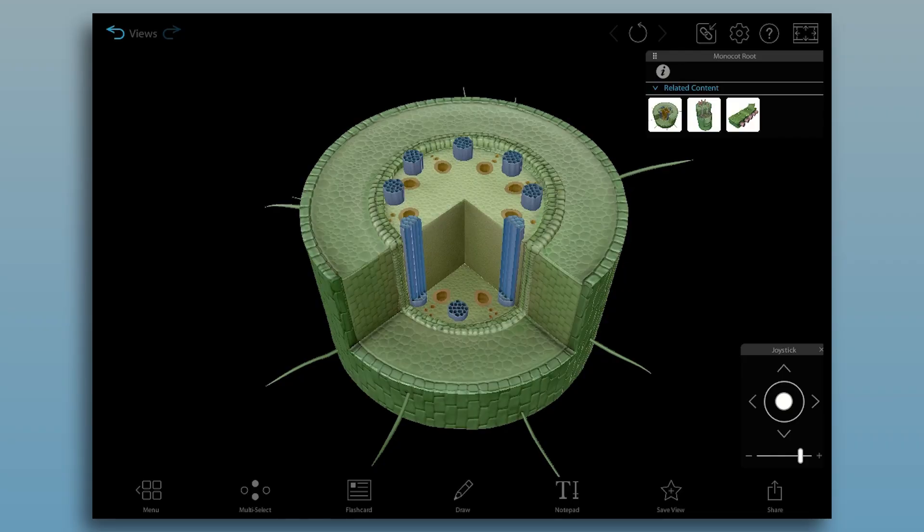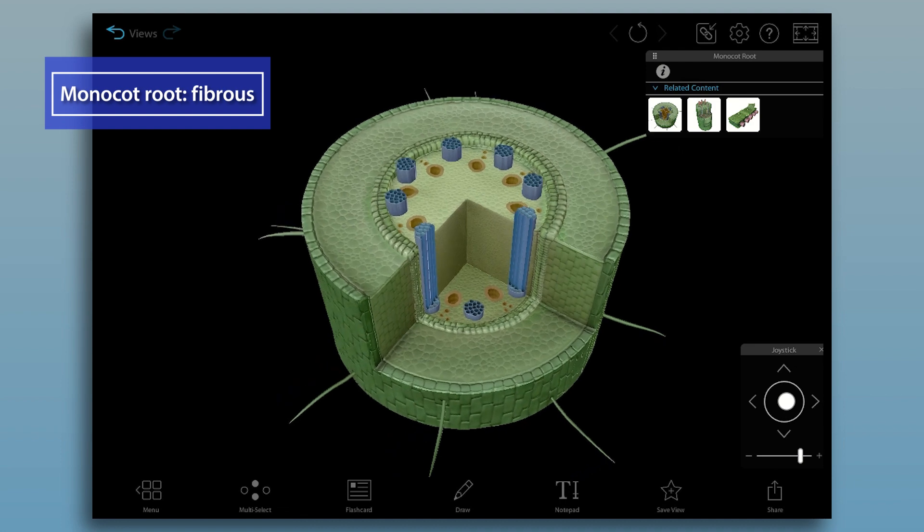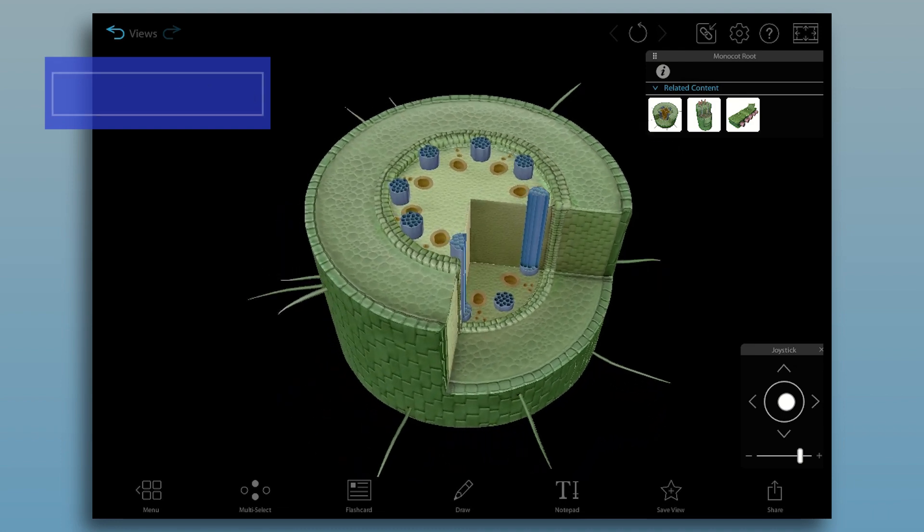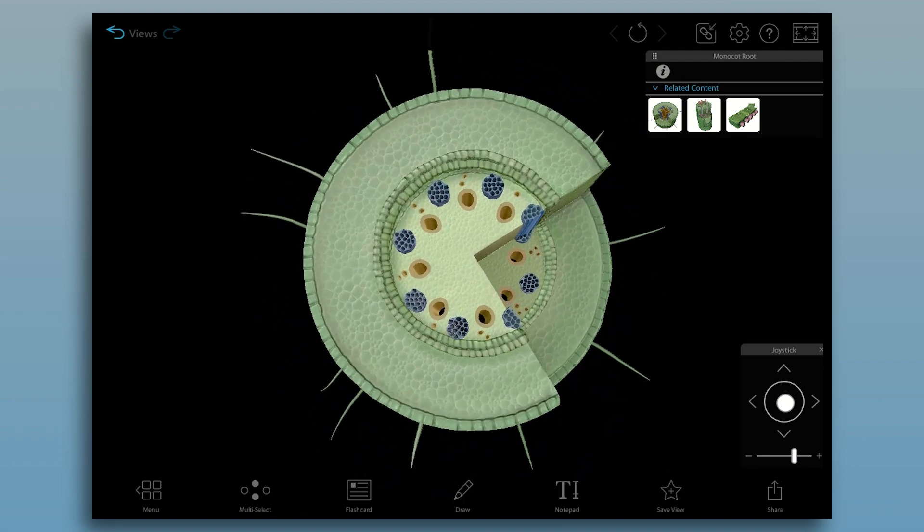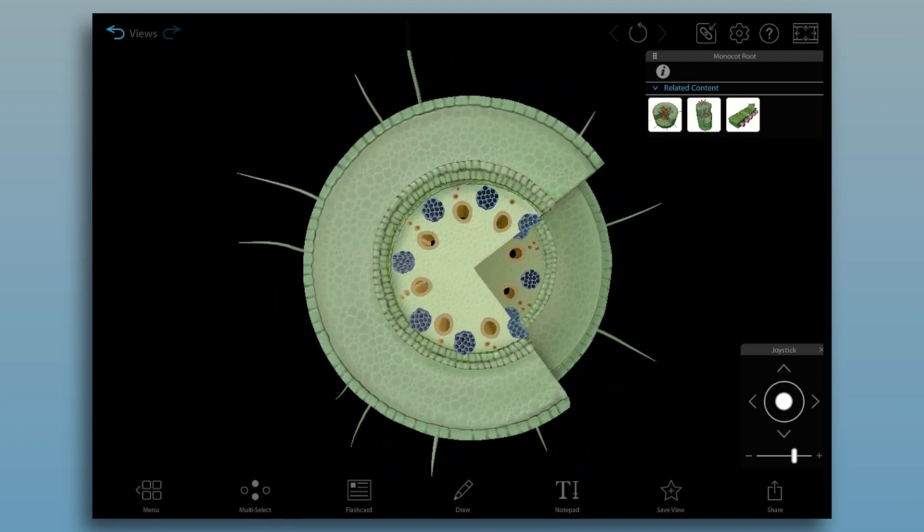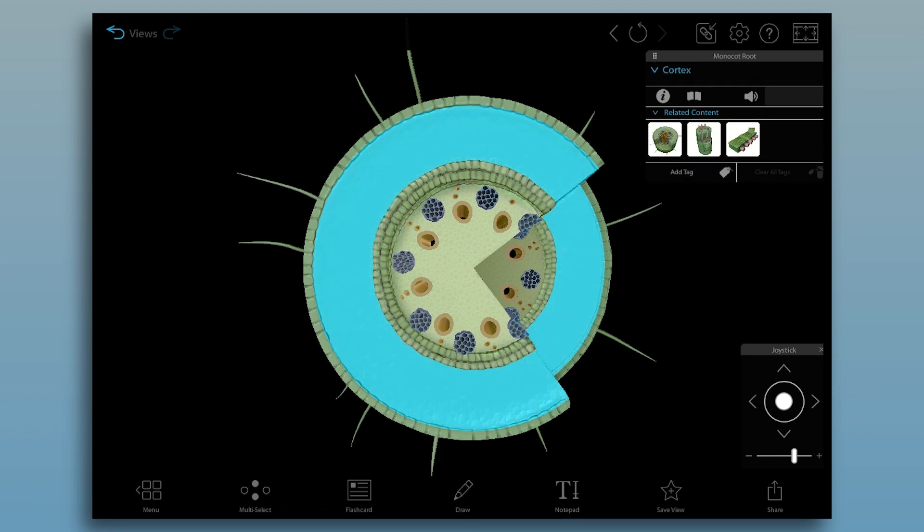Let's start with monocots. Monocot roots have a fibrous structure, forming a network of thin roots close to the soil's surface. Check out the placement of the vascular tissues. They form a ring that divides the ground tissue of the root into a cortex and a central pith.